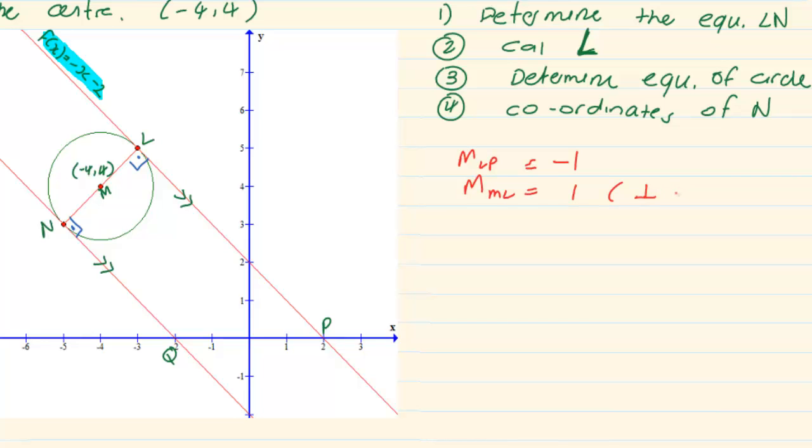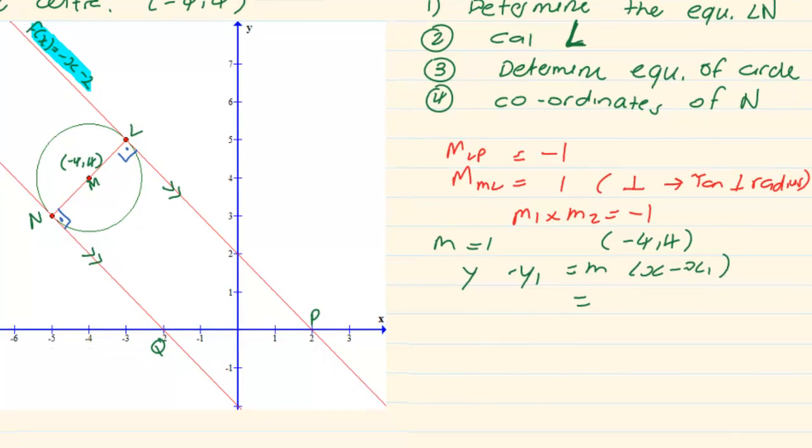The reason for that is it is perpendicular, tangent perpendicular to radius, and if it is perpendicular we know m1 times m2 is equal to negative 1. Now if we got the m and we got the point (-4, 4), then we use the straight line equation, simply substitute, which will give us the equation y = x + 8. Now that would be determine the equation of LN.